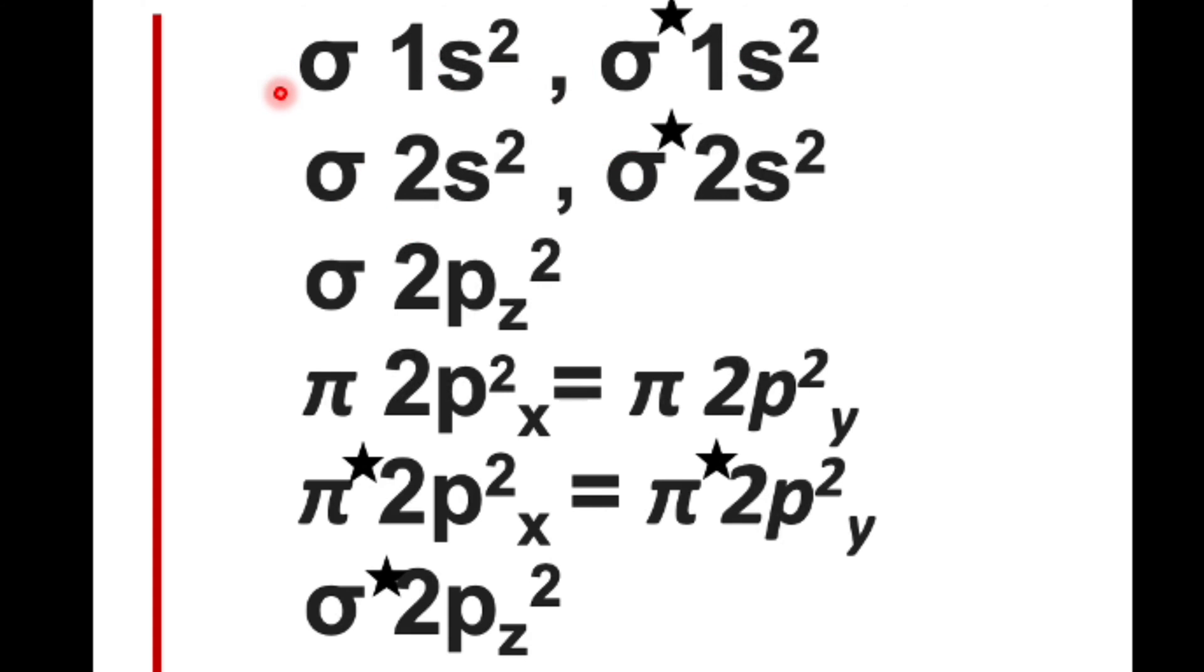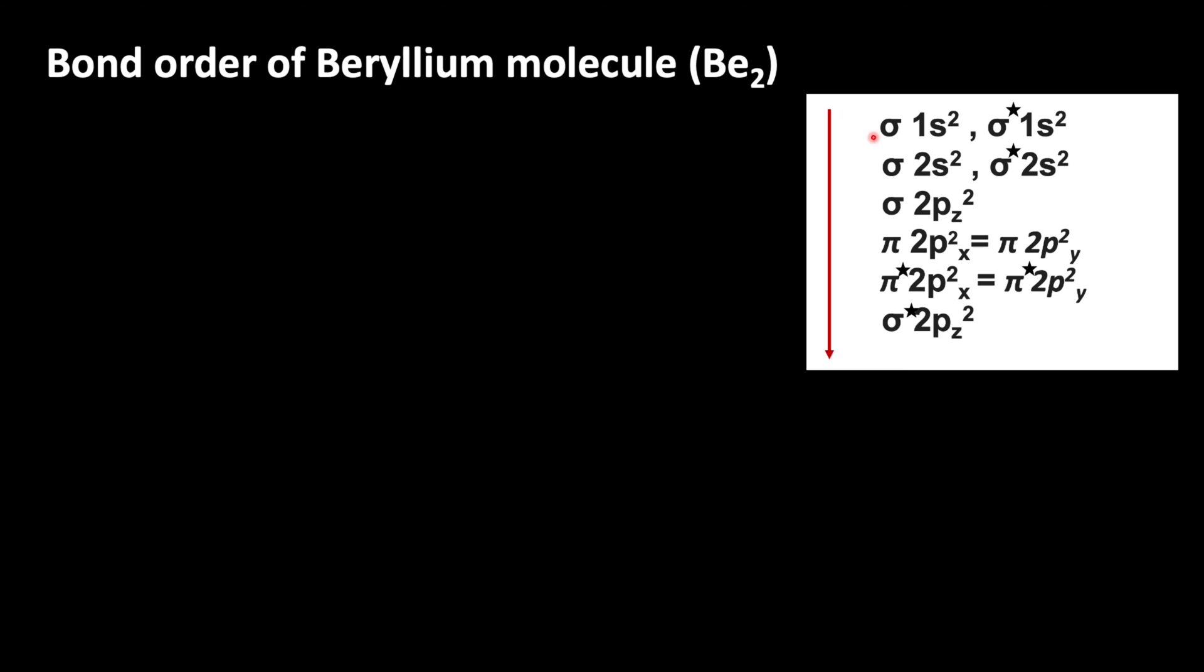Using this information, let us write the electronic configuration of beryllium molecule. Since beryllium molecule should contain 8 electrons, we can write the electronic configuration sigma 1s2, sigma star 1s2, sigma 2s2, then sigma star 2s2.